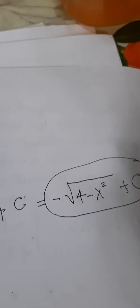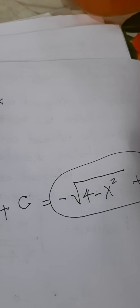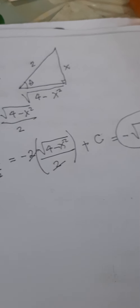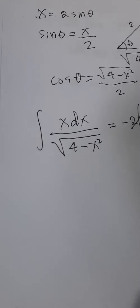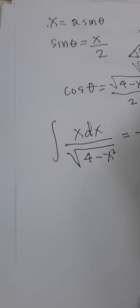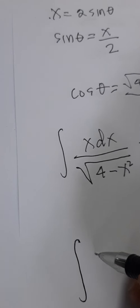The 2's cancel, giving us the final answer: negative square root of 4 minus X squared plus C. That is the solution using trigonometric substitution.